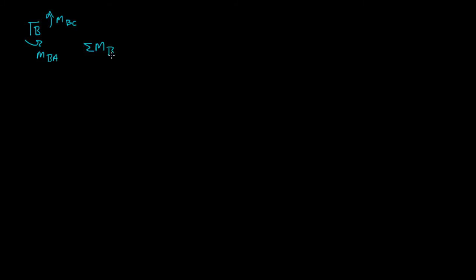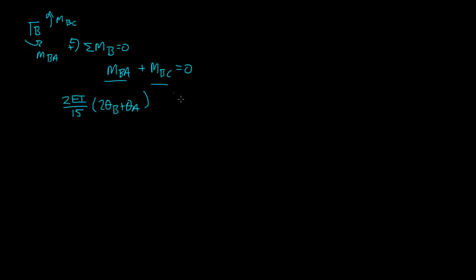If I looked at joint B, you had a clockwise — so this would be counterclockwise — you had these two moments: moment BC and moment BA. So if I said the sum of moments about joint B is equal to zero, then MBA plus MBC is equal to zero. Our equation for MBA was 2EI over 15 times (2θ_B + θ_A), and our equation for MBC was 2EI over 20 times (2θ_B + θ_C) is equal to 120.